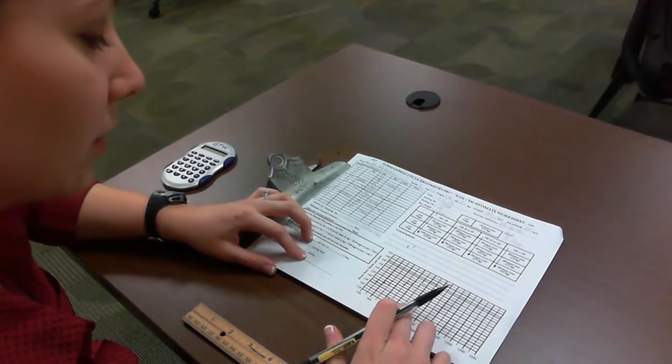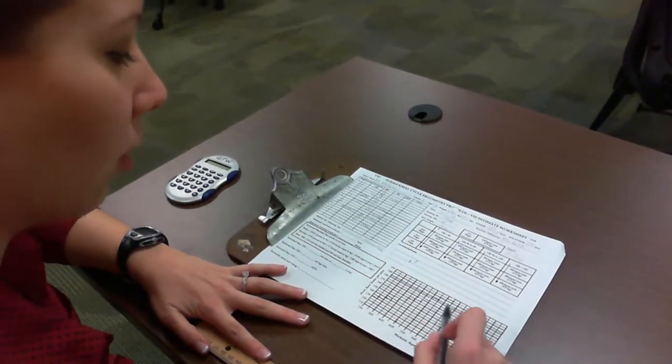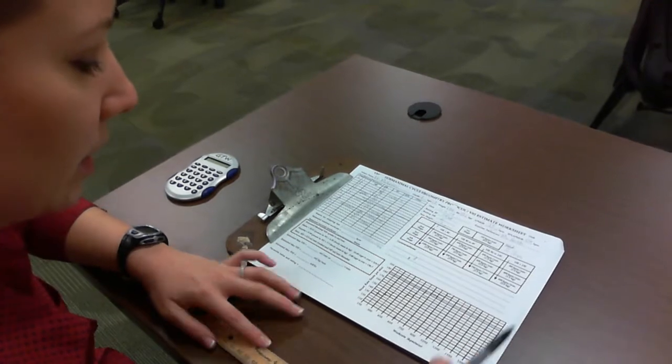Now what we're going to do is just connect these two dots and make sure that your line goes all the way past the age-predicted max heart rate.